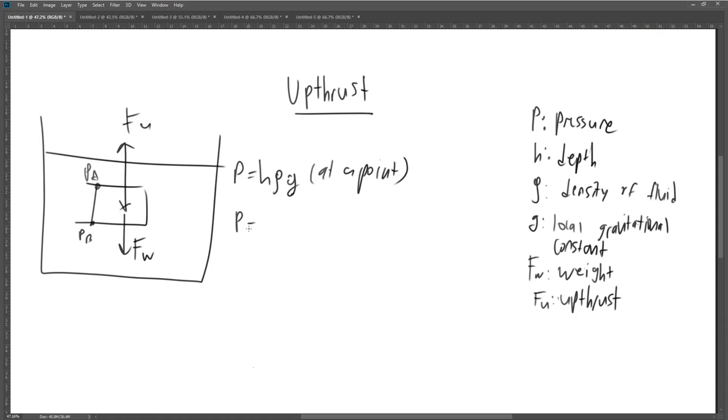For an object in a fluid, the pressure acting on top of the object is smaller in magnitude than the pressure acting below the object. Since force equals pressure times area, for the same area of an object, the force acting above the object is less than the force acting below.